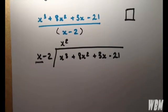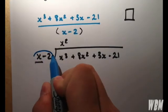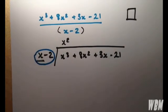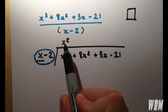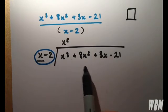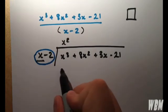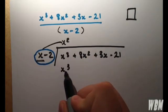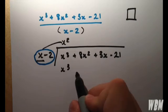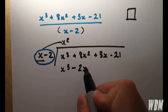Now, I'll help you out by circling here. What we do is we multiply x minus 2 by x squared and write it out here. So we have x to the power of 3 and minus 2x squared.